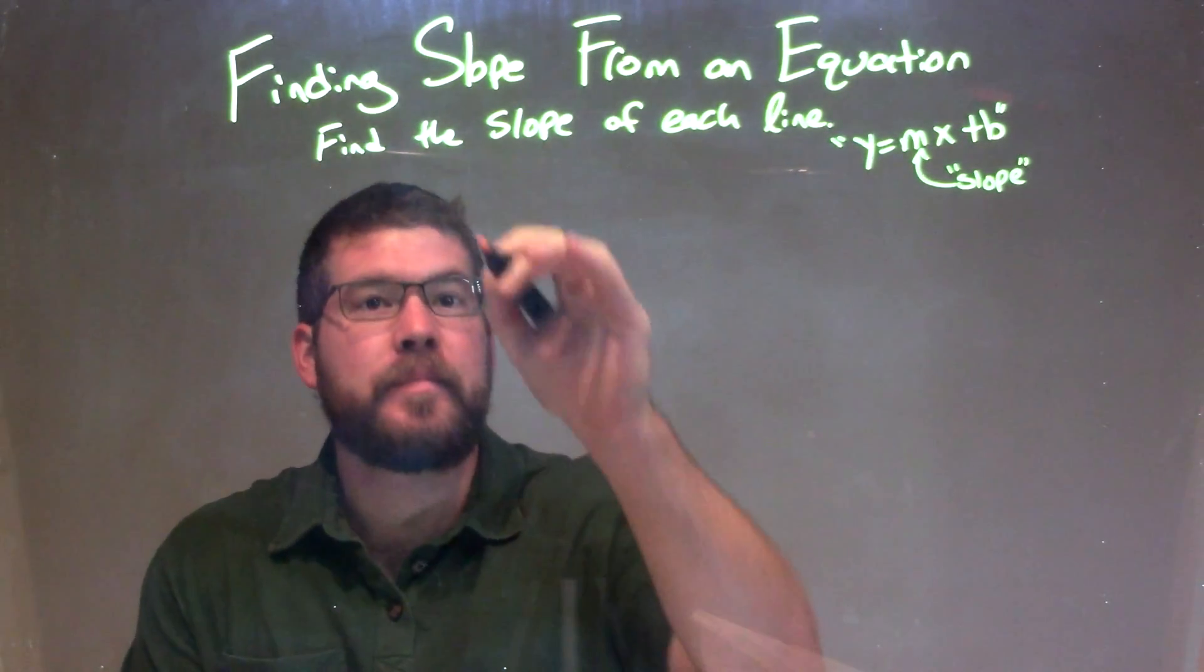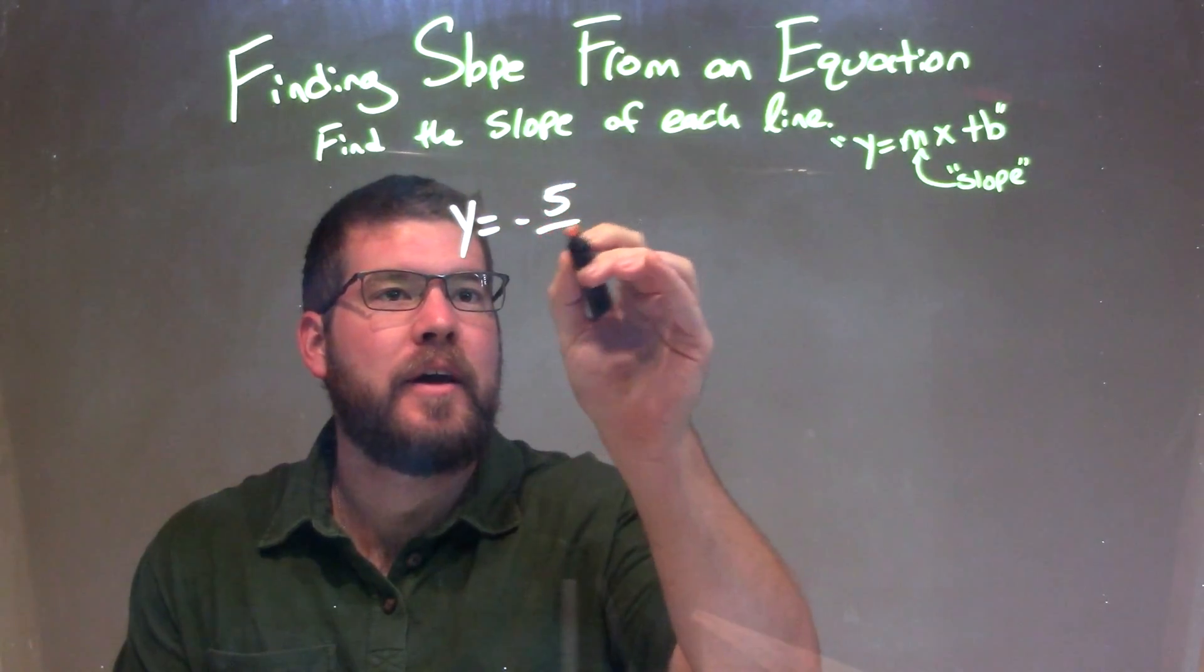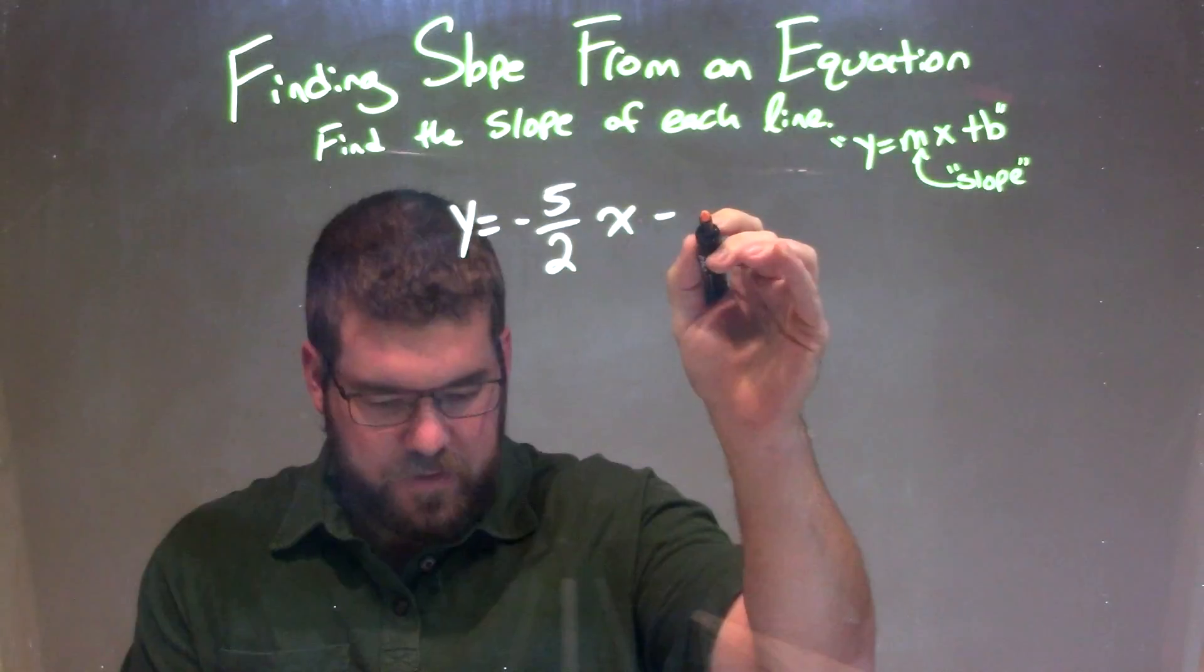So if I was given this equation, y equals negative 5 halves x minus 5,